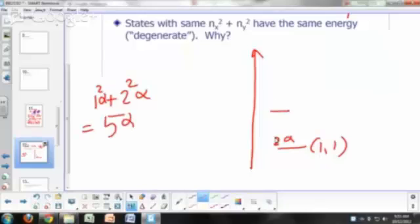And so this corresponds to n sub x equals 1, n sub y equals 2, or same thing for n sub x equals 2, n sub y equals 1. So that's going to be 1, 2, 3, 4, 5 alpha.